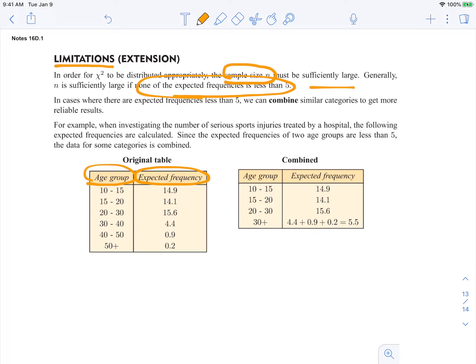Since the expected frequencies of 2 age groups are less than 5, we need to combine them.